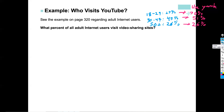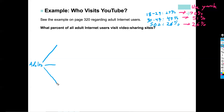We start the tree diagram on the far left with adults, then split into three age categories: 18–29 with probability 0.27, 30–49 with probability 0.45, and 50 and over with probability 0.28. Those proportions are written on the first set of branches.